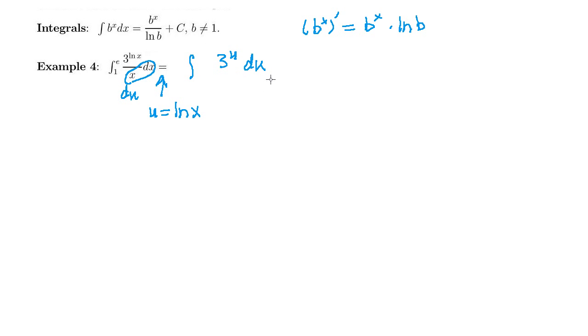And then I have to change over my limits of integration also. So if x is equal to 1, my lower limit right there, then u is going to be natural log of 1, which is 0. So our lower limit is 0. And then if x is equal to e here, then my u is going to be natural log of e, which is 1.